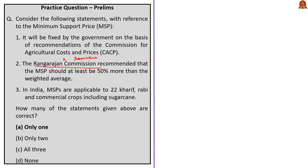The third statement: in India, MSP is applicable to 22 Kharif, Rabi, and commercial crops including sugarcane — this is wrong because sugarcane is given a separate price called FRP, which is very different from MSP. So, eliminating statements 2 and 3, the correct option is option A.